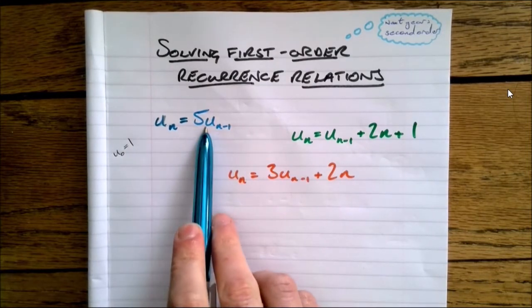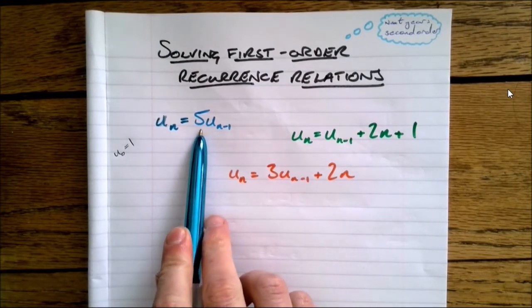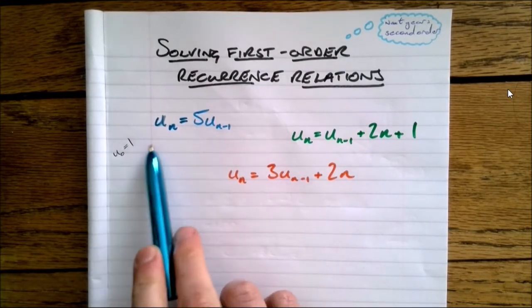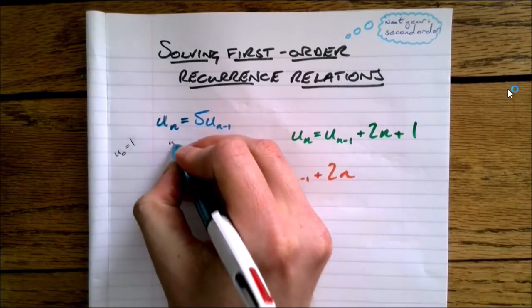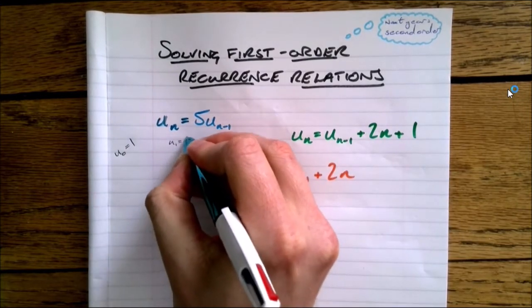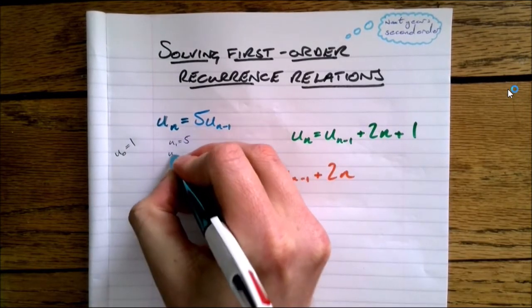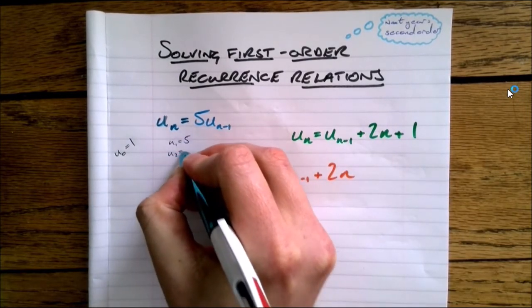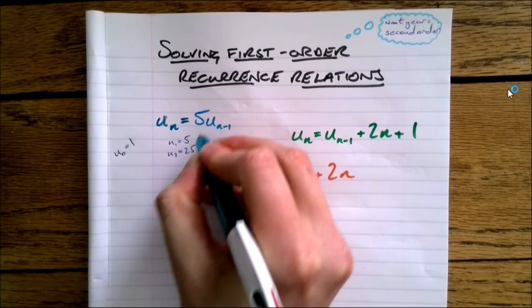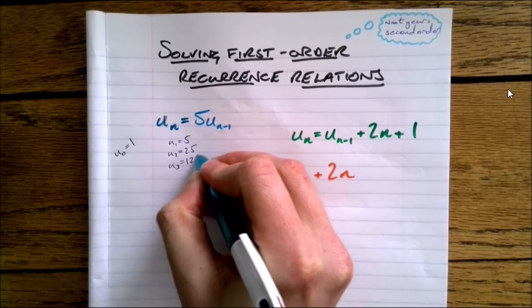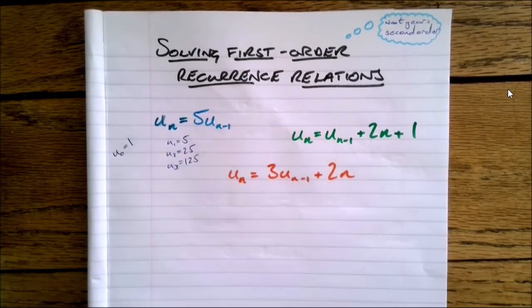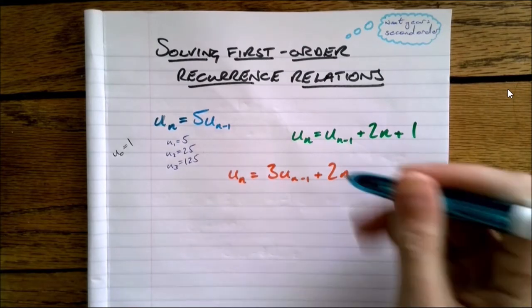So this first one — what's it doing? Well, if U0 is 1, then U1 is going to be 5 times that, U2 is 5 times that, U3 is 5 times that. It's just multiplying by 5 each time. That's not too hard.